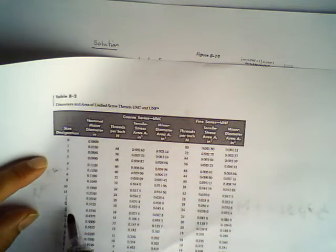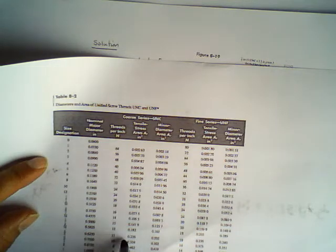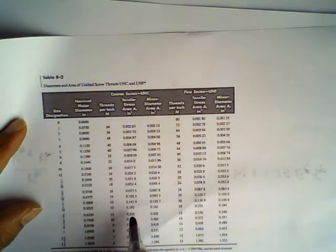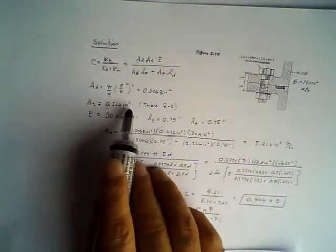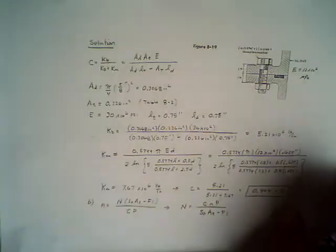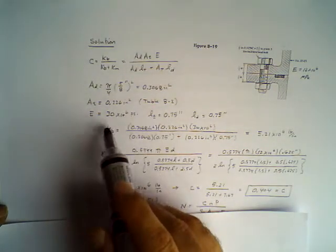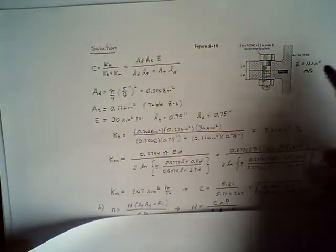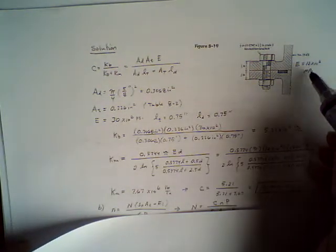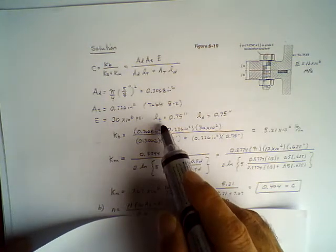How do I get my At? I'm going to look it up. My size designation is 5/8 and 11 threads per inch, so I have 5/8 and 11. Looking in the first column for 5/8-11, my tensile area is going to be 0.226. If you can't see it here, check it in your notes, which is here, 0.226.